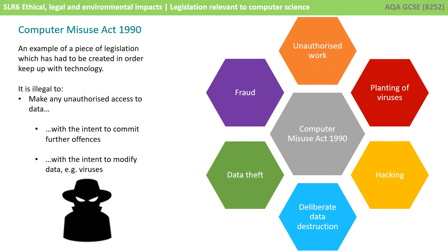Another piece of legislation you have to be aware of is the Computer Misuse Act of 1990. This is an example of a piece of legislation which had to be created in order to keep up with technology. This act makes it illegal to make any unauthorised access to data with the intent to commit further offences or with the intent to modify data, e.g. via viruses. By bringing in this act, there's a whole series of online activities which are now illegal — some examples include the planting of viruses, hacking, data theft, and fraud.